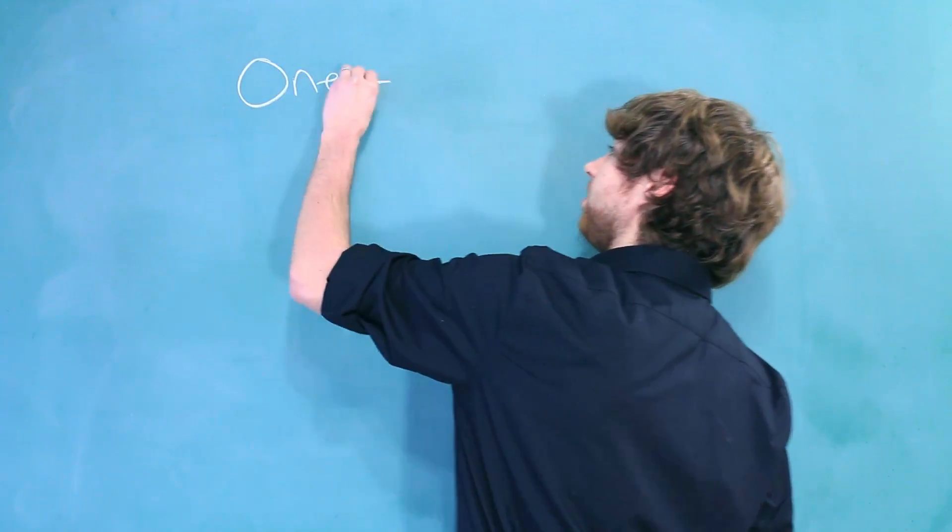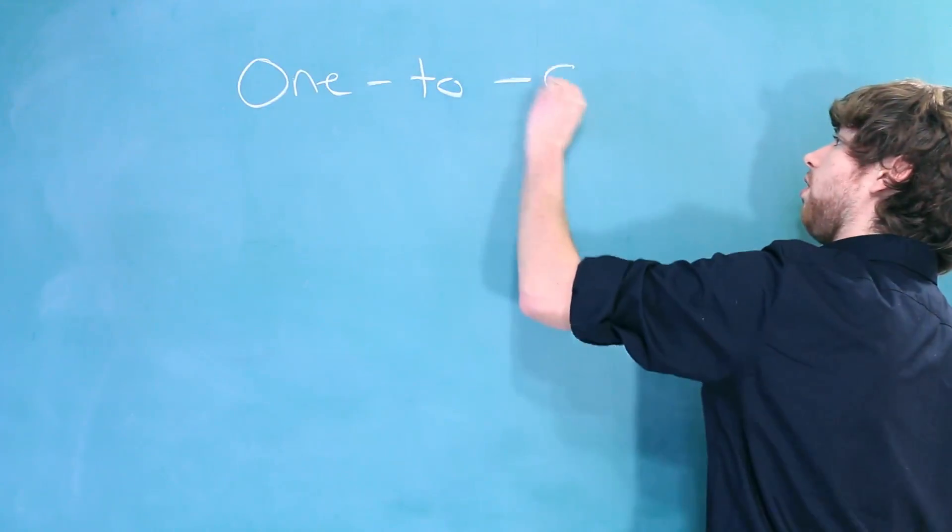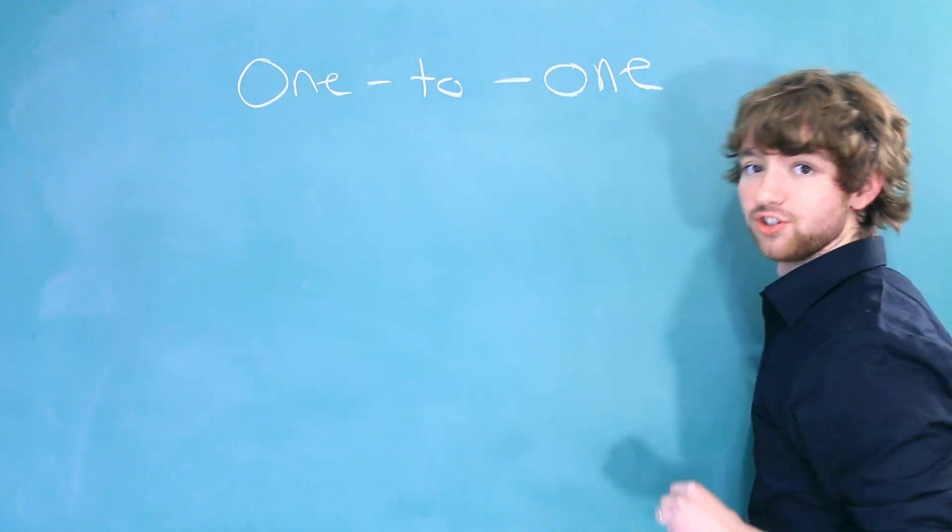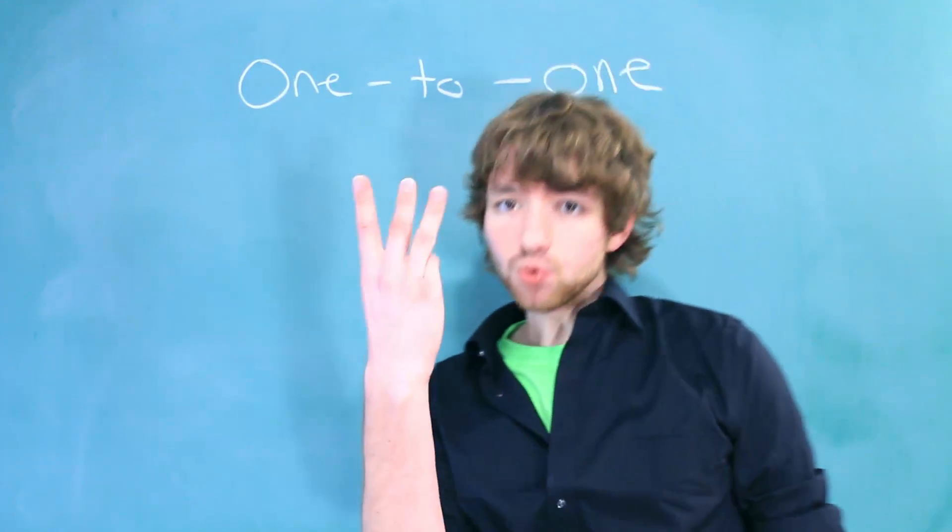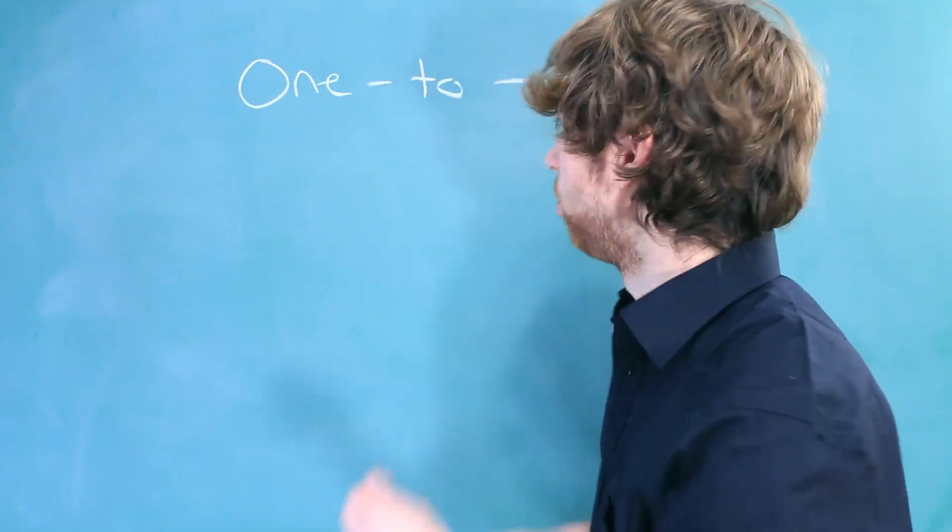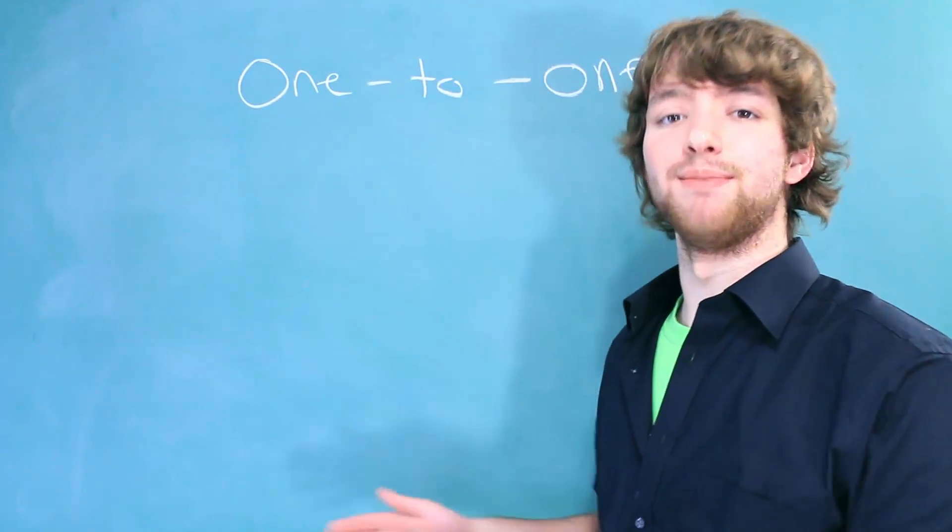So, we are going to be talking about one-to-one relationships. Now, there are three types of relationships: one-to-one, one-to-many, and many-to-many.